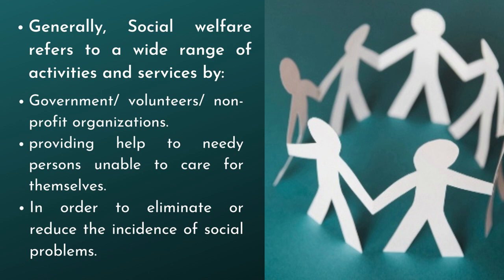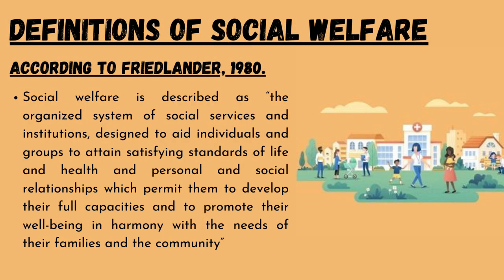Definitions of social welfare: according to Friedlander (1980), social welfare is described as the organized system of social services and institutions designed to aid individuals and groups to attain satisfying standards of life and health, and personal and social relationships which permit them to develop their full capacities and to promote their well-being in harmony with the needs of their families and the community.